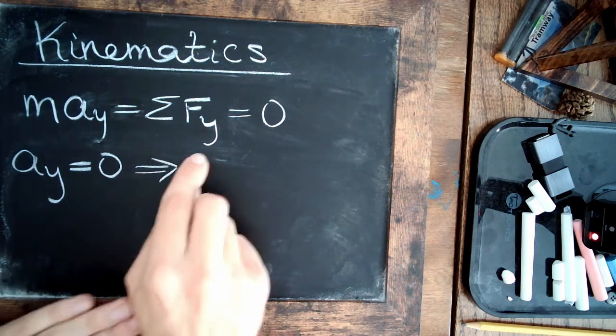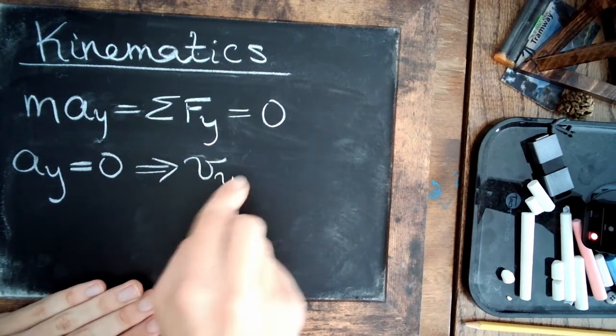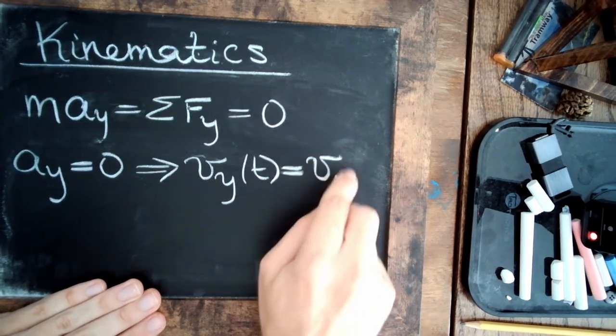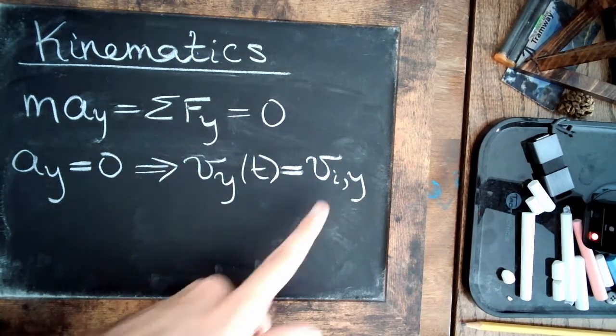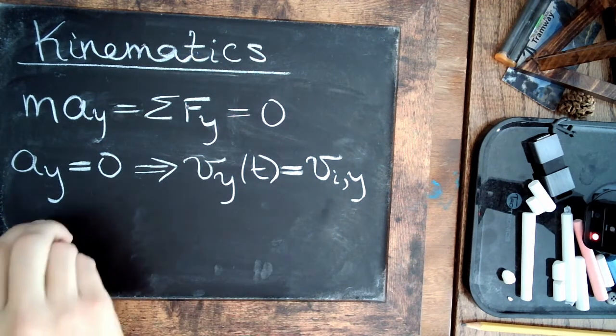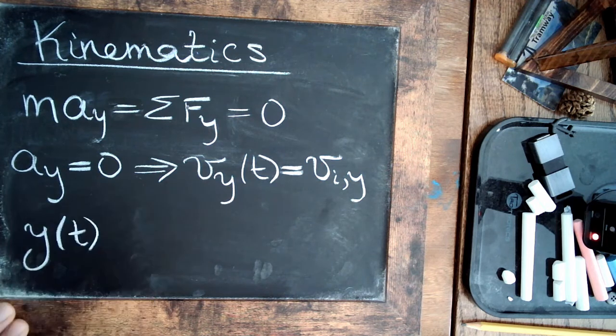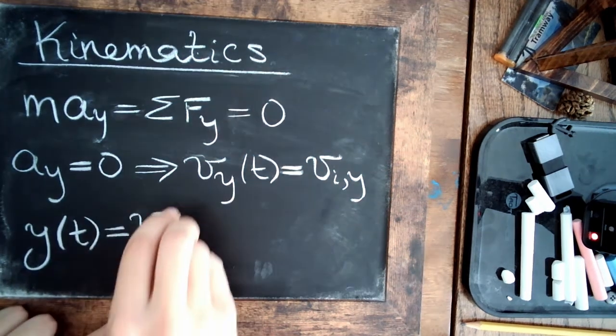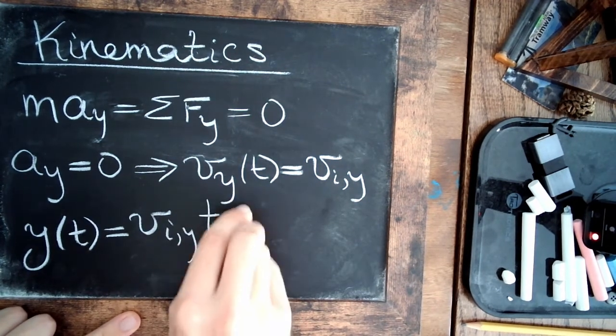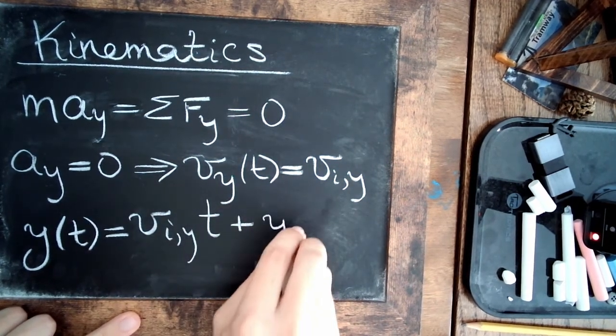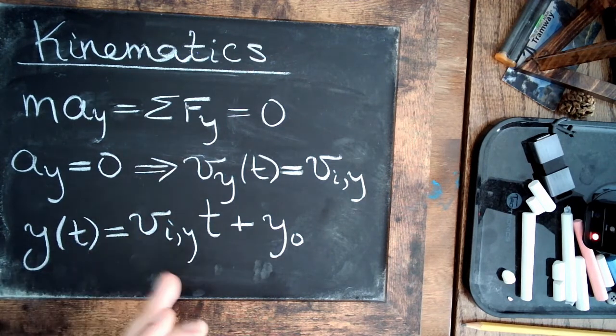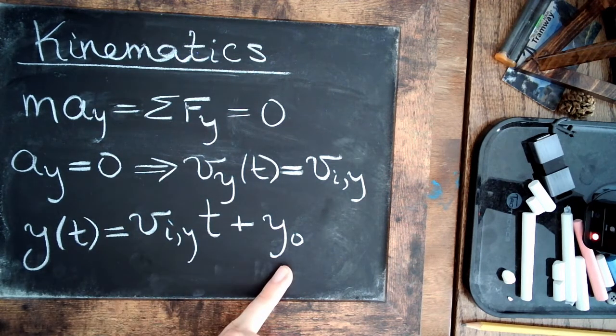What that means is that the y velocity as a function of time is going to be just a constant. It's going to be whatever it starts out as. There's no forces that could change it. If we then integrate that, the y position is a function of time. It's just going to be that initial constant times t plus another constant, y zero, which is the initial position in the y direction. So those are the two constants we need to specify.